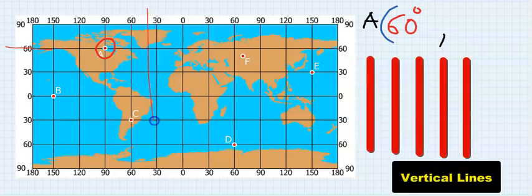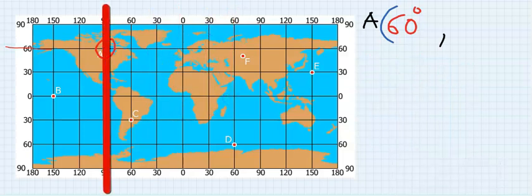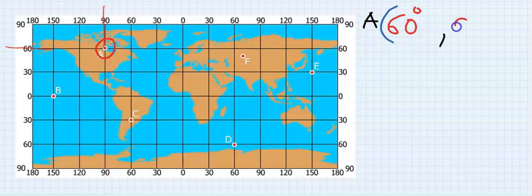Next, you put a comma and you read the longitude. The longitude are the lines that are vertical, and this falls at 90 degrees, hence you're going to write 90 degrees.